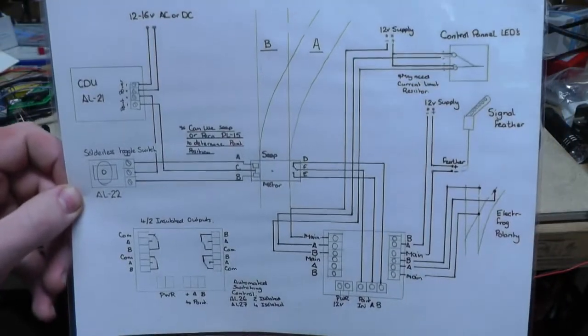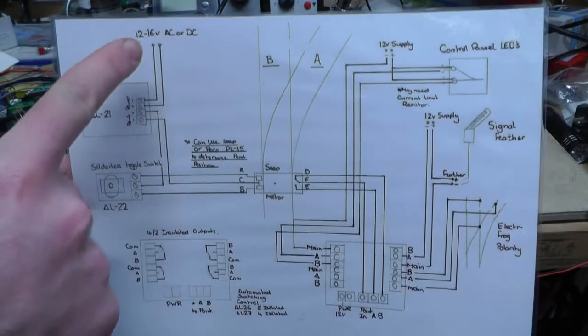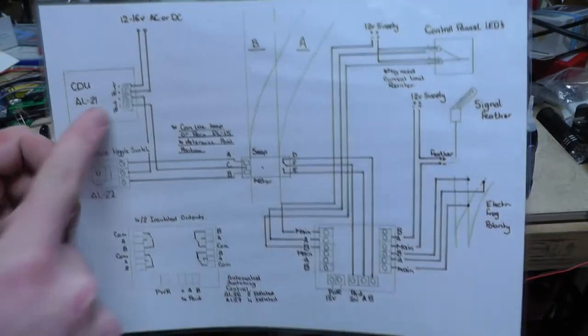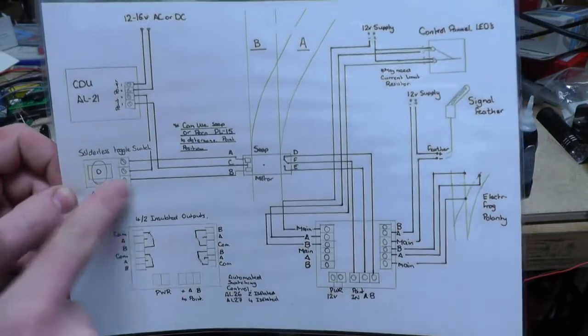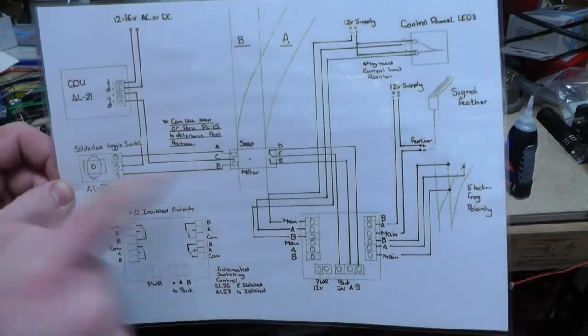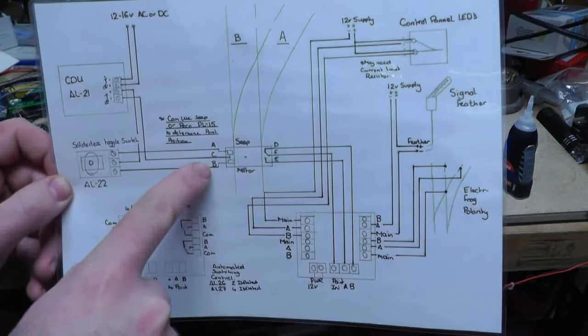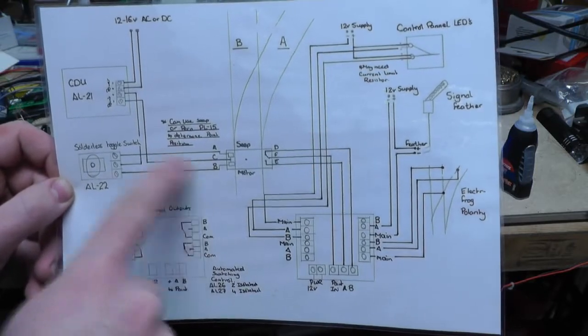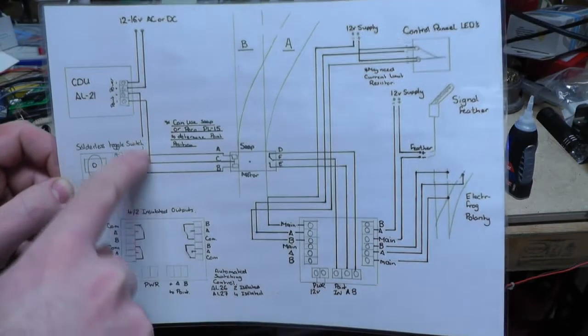There we go, just get it to zoom in. So we've got the normal point motor power to a CDU. From that it goes to the solderless switch to the seat point motor solder tab A, C, and B. So obviously B and A are the coil negatives or the coil positives, and C's the common.